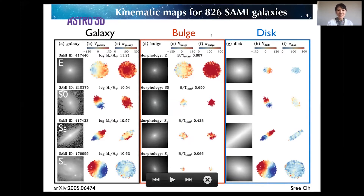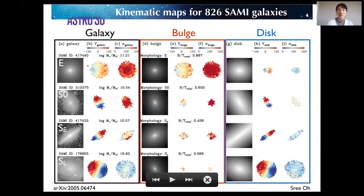This is the largest sample for spectroscopic bulge-disk decomposition, and also the first sample including all types of galaxies from ellipticals to late spirals. This is an example: the first column shows the flux, the second column shows the rotation velocity, and the third column shows the velocity dispersion.